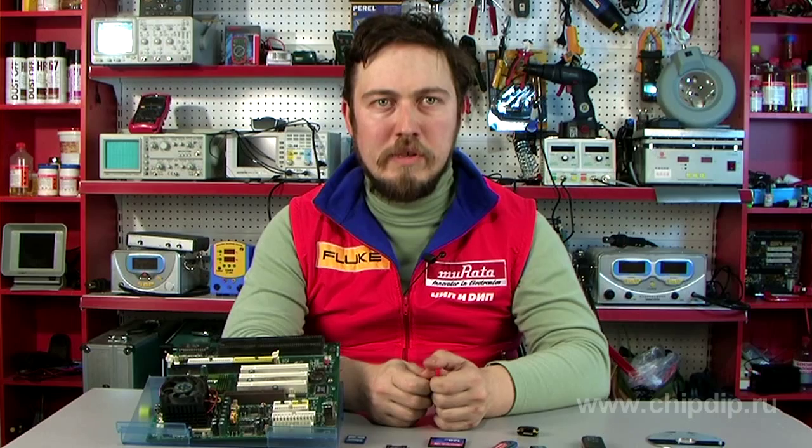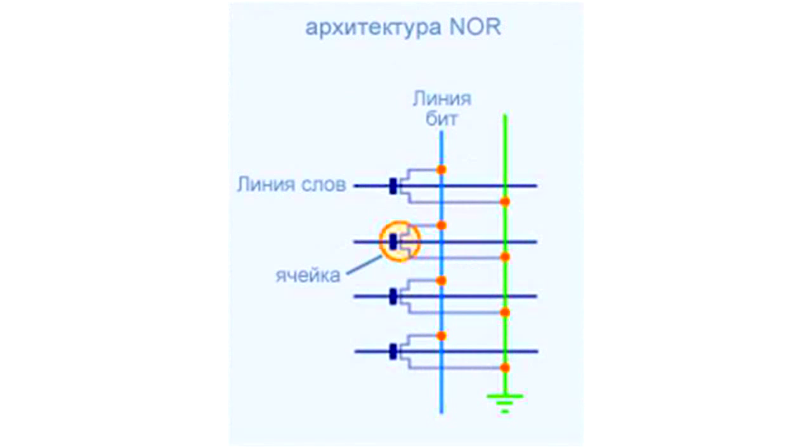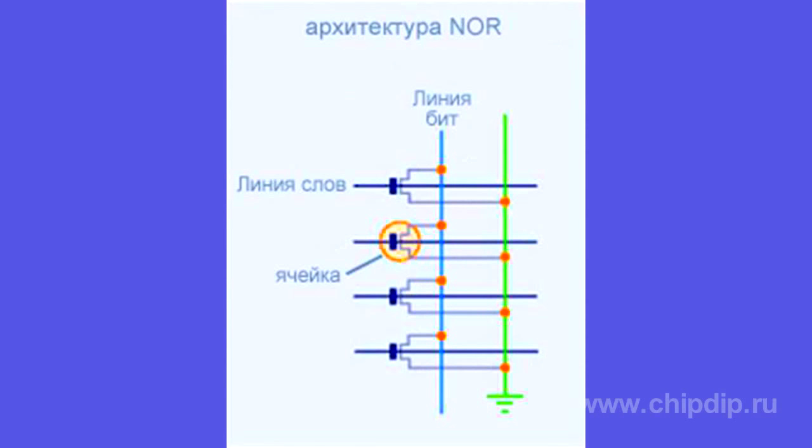NOR flash is based on a NOT-OR element, because low voltage applied to the gate of the floating-gate transistor is equivalent to one. The transistor has two gates: the control gate and the floating gate.